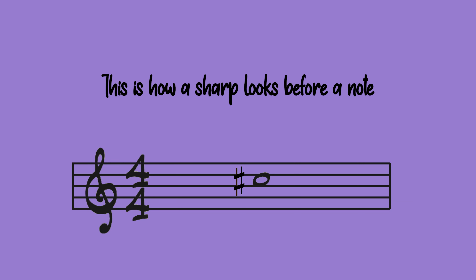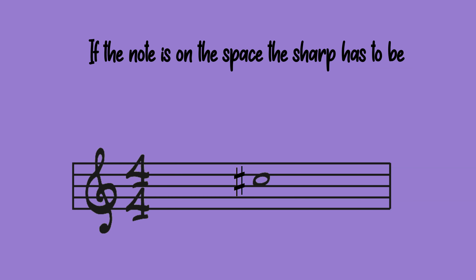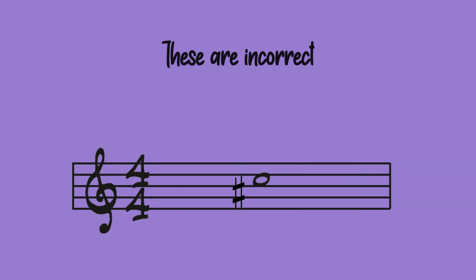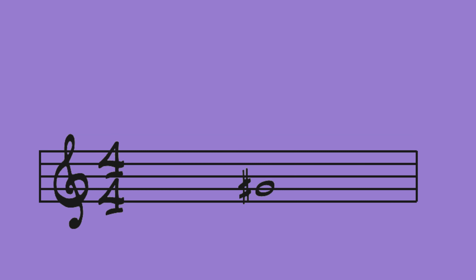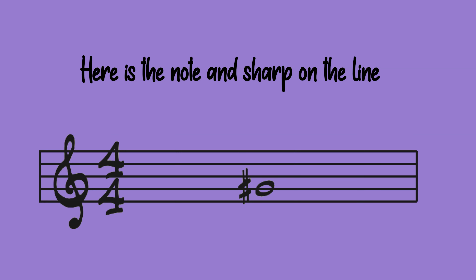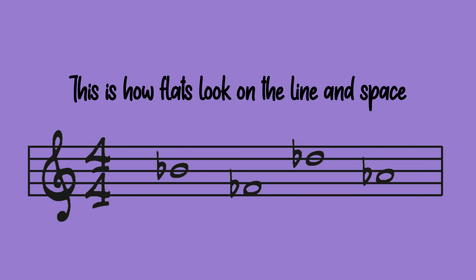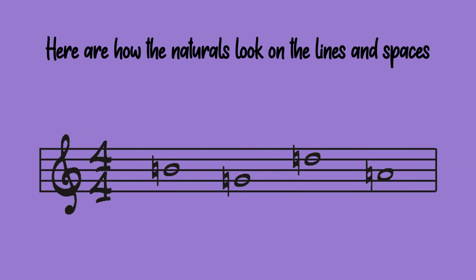We will now look at how accidentals look in the staff. This is how a sharp looks before a note. If the note is on the space, the sharp has to be written on the same space. These are incorrect. Here is the note and sharp on the line. This is how flats look on the line and space. Here are how the naturals look on the lines and spaces.